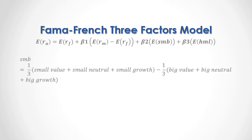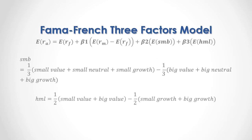The small minus big portfolio is equal to one-third multiplied by small value plus small neutral plus small growth portfolios, minus one-third multiplied by big value plus big neutral plus big growth portfolios. The high minus low portfolio is equal to one-half multiplied by small value plus big value portfolios, minus one-half multiplied by small growth plus big growth portfolios.